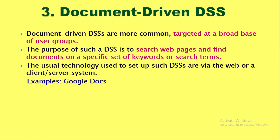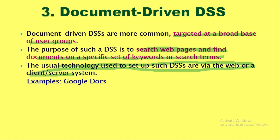Number three: document-driven decision support system. These DSS target various documents, exploring and searching them, and target a broad base of user groups. They search various web pages and find keywords in searches on documents available as web pages on the internet. The technology can be web or client-server. An example is Google Docs, which stores documents online and allows searching using various keywords.